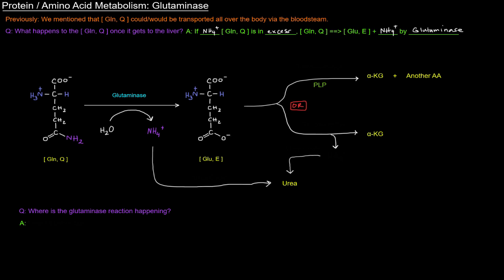And so that free ammonium ion can go through the urea cycle to produce urea. Where is this reaction happening? Well, it happens in the liver, specifically the liver mitochondria, which is why it can eventually go to the urea cycle and produce urea.